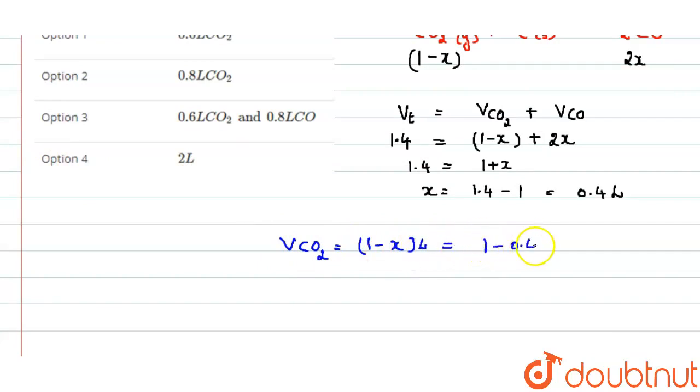So from here we can solve that volume of carbon dioxide is equal to 1 minus x liter, that is equal to 1 minus 0.4 liter, that is equal to 0.6 liter. Now similarly, volume of carbon monoxide is equal to 2x liter. This is 2x liter, that is equal to 2 into 0.4 liter, that is 0.8 liter.